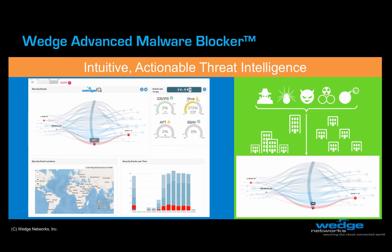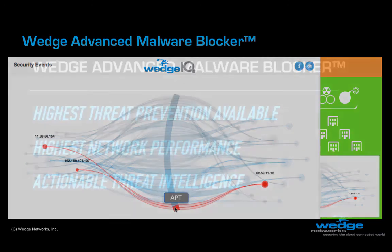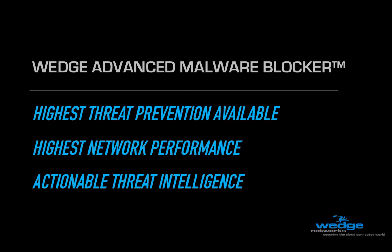Wedge IQ provides a wealth of information regarding traffic types and utilization patterns, and also visualizes a virtual security shield, clearly showing the origination and destination of various types of threats and the frequency of those threats. Hovering the mouse over the interactive bar indicates various types of threats, such as advanced persistent threats, with multiple threat events originating from the same endpoint targeting different endpoints within the enterprise. This is clearly a red flag alert of a potentially serious targeted attack. The highest accuracy threat detection, best network performance, and actionable threat intelligence are just some of the reasons why Wedge Advanced Malware Blocker may be the ideal solution for your security needs.